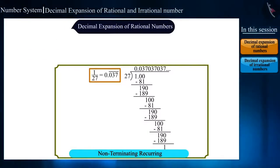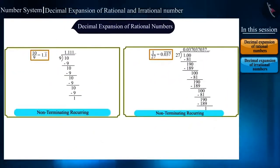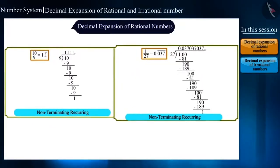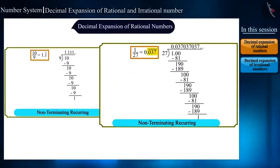Friends, can you tell what is the difference between examples 2 and 3? In example 2, only one number is repeating. But in example 3, a group of digits are repeating.